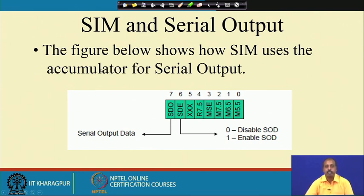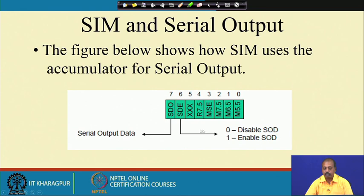First we will discuss the SIM instruction and the serial output part. In the accumulator setting, bits 0 to 4 are for interrupt masking, bit 5 is not used, and bit number 6 is for disabling and enabling serial output data — SDE, serial data enable. If it is 0, serial output data is disabled; if it is 1, it is enabled. The SDO bit, bit 7, holds the data to be sent outside through this pin.